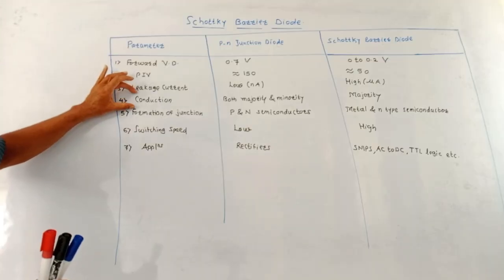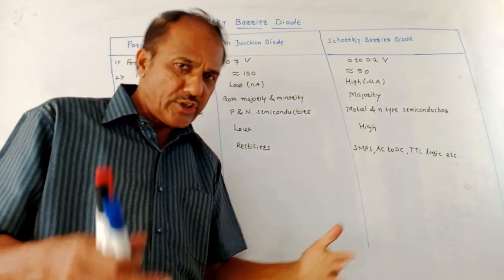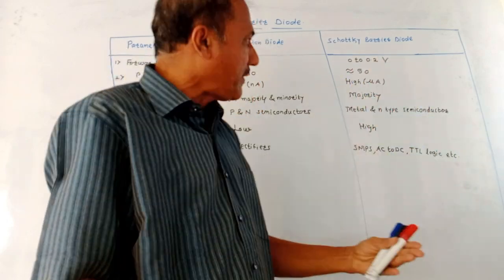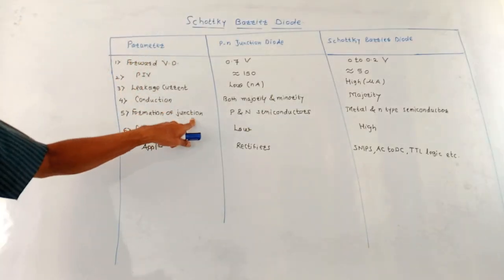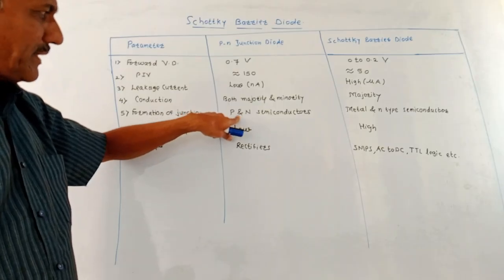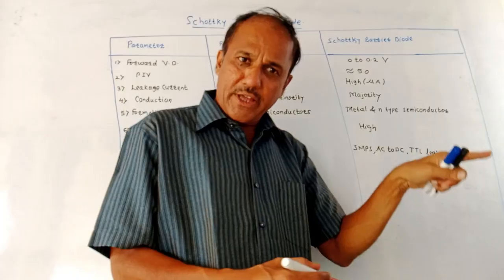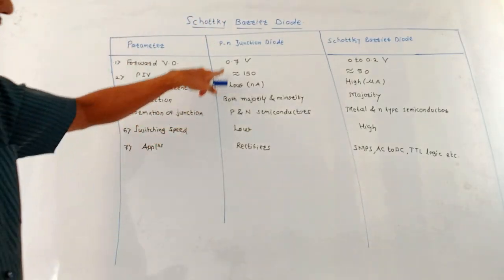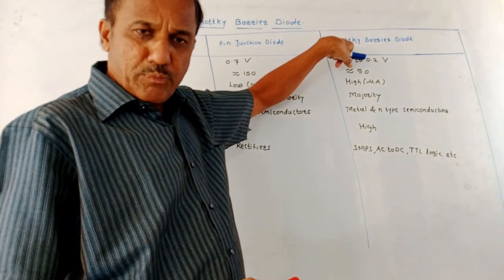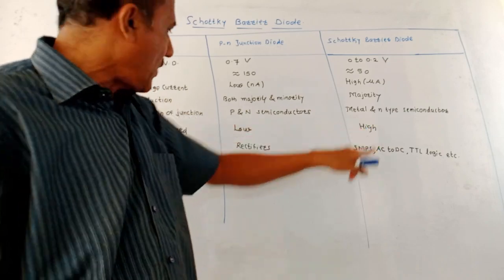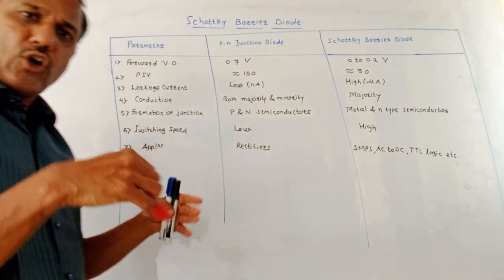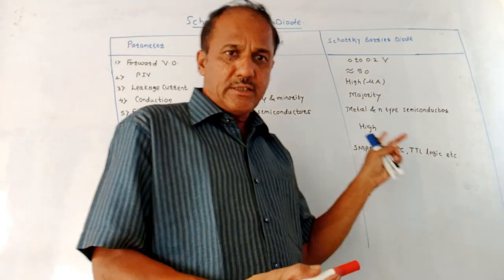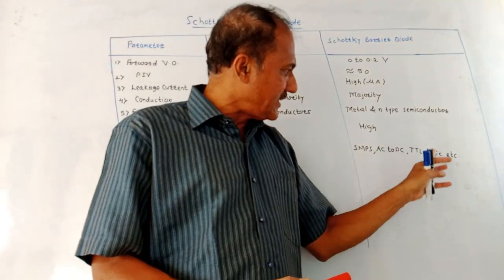Conduction in a normal PN Junction Diode takes place due to both majority and minority carriers, whereas in the Schottky Barrier Diode conduction takes place only because of electrons. The junction in a PN Junction Diode is formed between P and N semiconductor material, whereas in the Schottky Barrier Diode the junction is formed between the metal and N-type semiconductor layer. Switching speed of a PN Junction Diode is low, whereas for the Schottky Barrier Diode it is high — that's why these diodes are used in microwave applications. Normal PN Junction Diodes are used in rectifiers, whereas Schottky Barrier Diodes are used in SMPS, AC to DC converters, TTL logics, and so on.